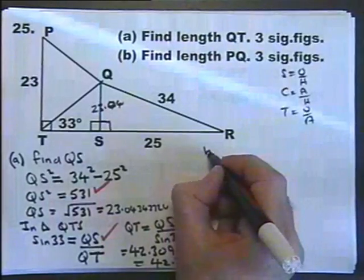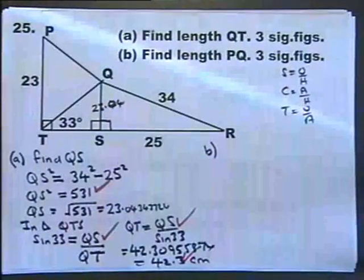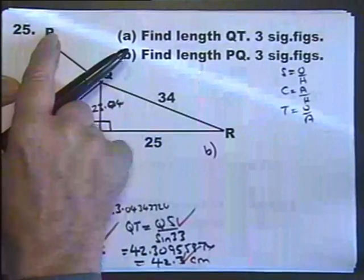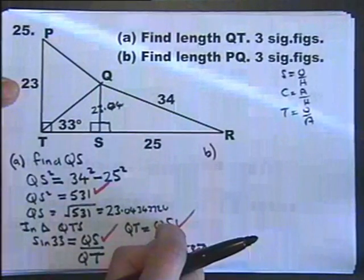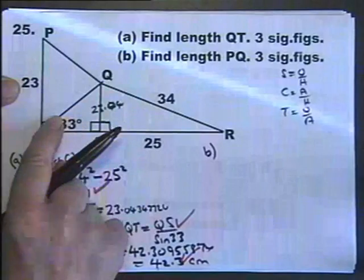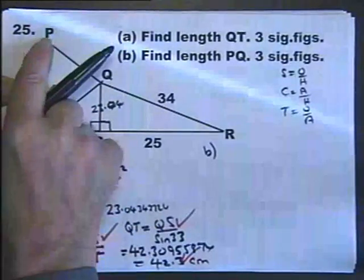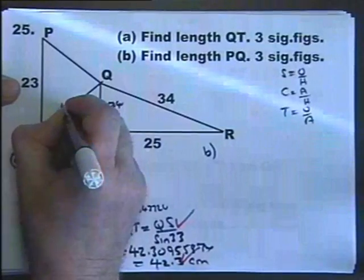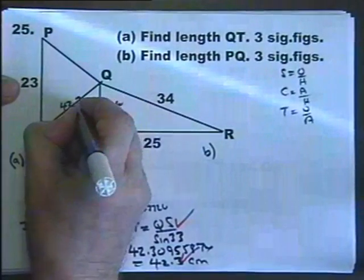Now we move on to part B. Find the length of PQ. That's that there. Now at the moment, looking at that triangle, well at the beginning, all I knew that was 23. But now I know that this is 42.3